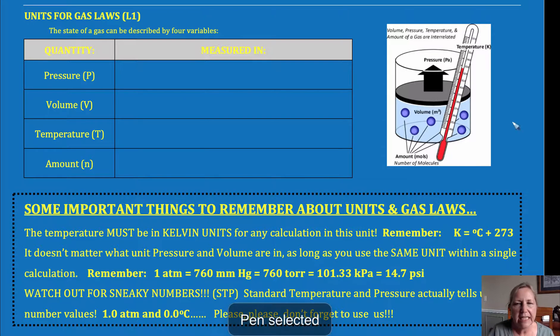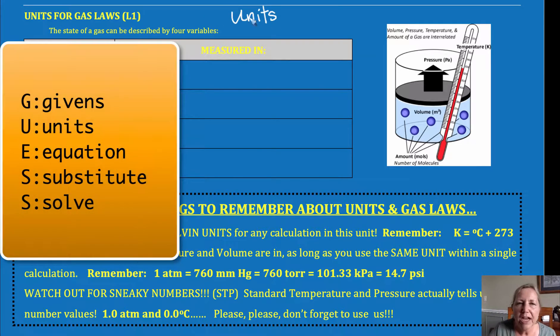Whenever you do problems in chemistry, one of the first things you want to do is check your units. Many teachers will have you put the units within the calculation just to make sure that they cancel, and I think that's a great practice. I myself find that a little bit too cumbersome, so I usually write down my givens. I use the GUESS method: write down my givens, check my units, write my equation, and then I substitute and solve. That's the GUESS method, and a key part of that are units.